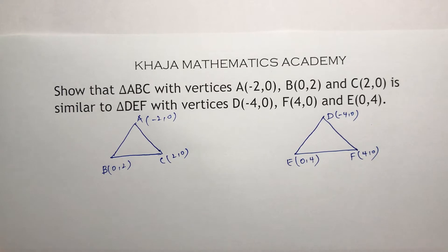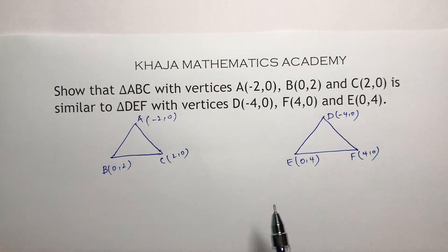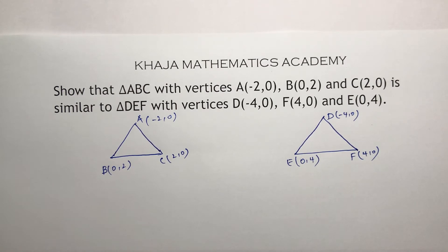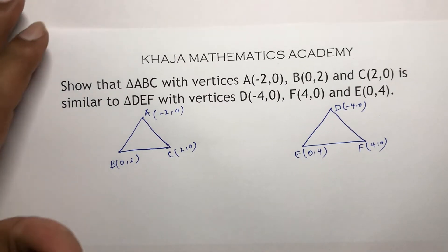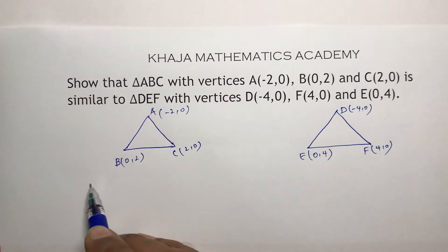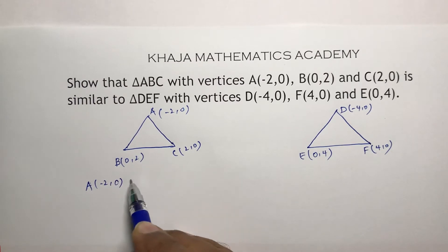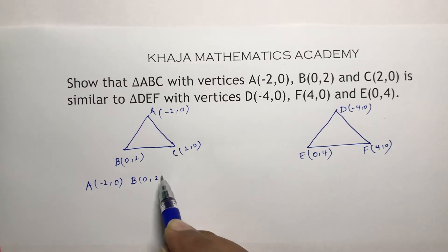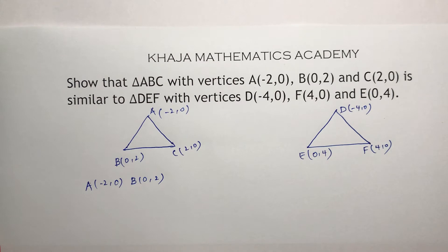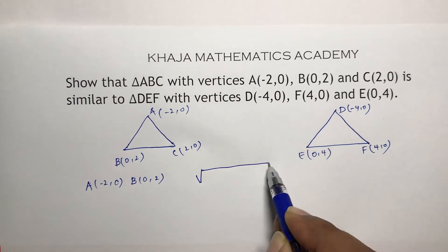To prove similarity, first I will find the distances of all three sides, then compare their ratios. If the sides are proportional, then we can say these two triangles are similar. So first I will find the distances using the distance formula.